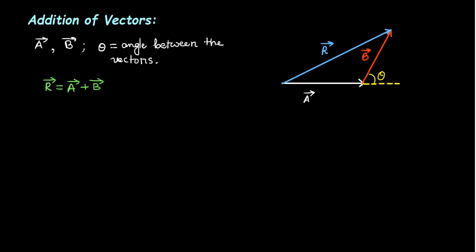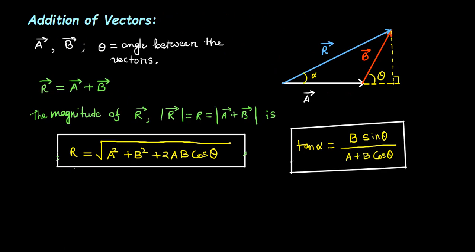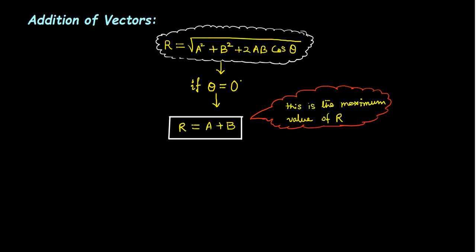R is called the resultant vector of addition. Since R is a vector, it has magnitude and direction. The magnitude of R is derived using the law of parallelogram, and the direction of R is specified by the adjacent angle alpha, where tan(alpha) is given by the corresponding formula. The value of R depends on A, B, and theta. I will now discuss three standard cases depending on the value of theta.